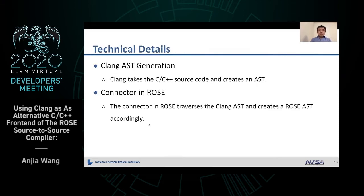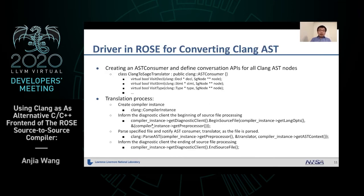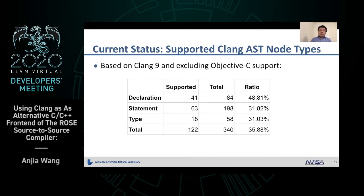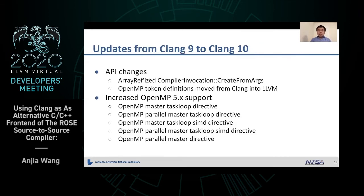The working process is: first, we use Clang to create AST as usual. Then in Rose, we traverse that AST and convert it to Rose AST accordingly. We have designed several interfaces to convert specific AST nodes, and we use the AST consumer and the translator for the conversion. At this point, we already support about one-third of Clang 9 AST nodes, and we are working on the upgrade from Clang 9 to Clang 10 for better OpenMP 5 support.